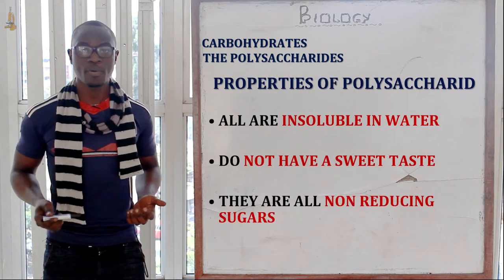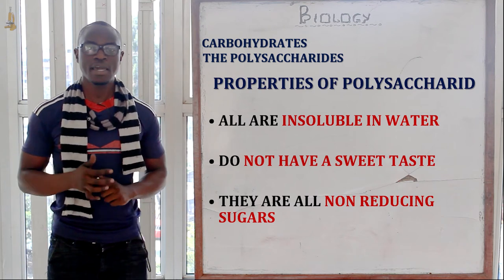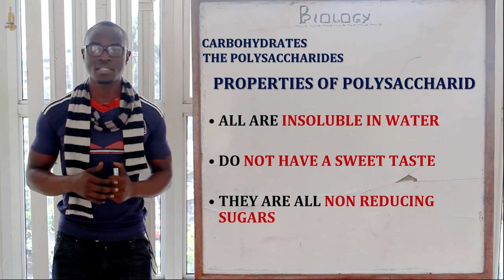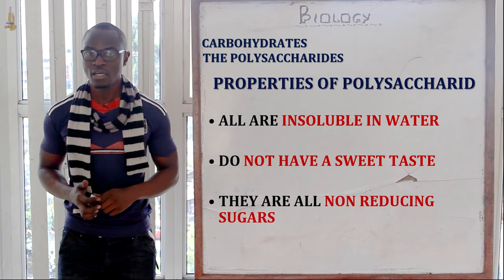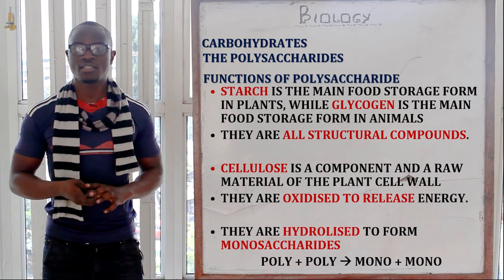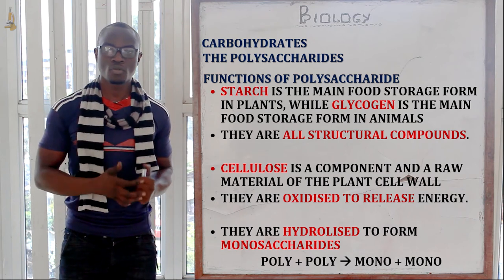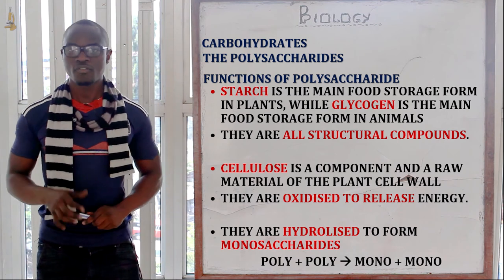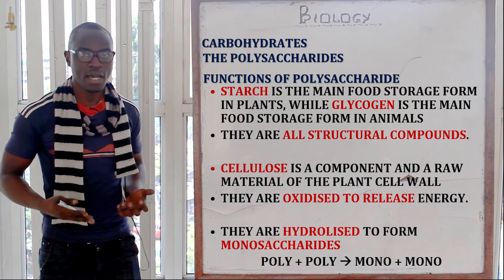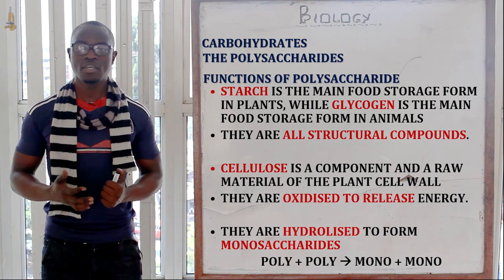Polysaccharides are insoluble, which makes them ideal storage materials as they do not exert osmotic pressure and do not easily diffuse out of the cell. They are not sweet tasting and are non-reducing sugars. In terms of function, starch is the main stored carbohydrate in plants, glycogen is the main stored carbohydrate in animals, and cellulose is the main raw material for cell walls in plants. Polysaccharides may also be hydrolyzed into many monosaccharides to act as a respiratory substrate, providing energy to the cell and organism.